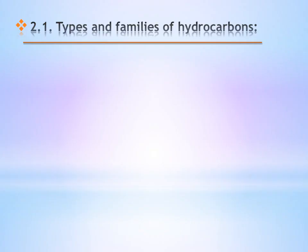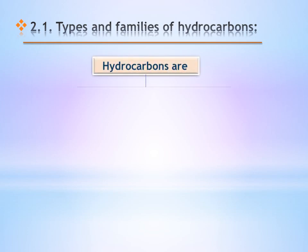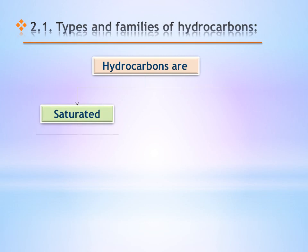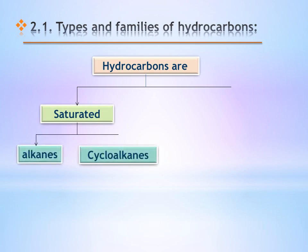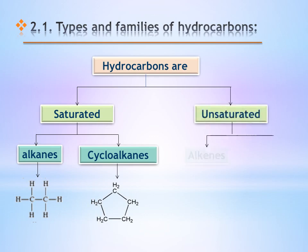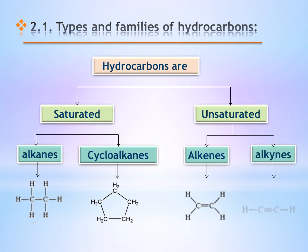Now, what are the types and families of hydrocarbons? Hydrocarbons could be saturated, like alkanes or cycloalkanes, where all the bonds are single covalent bonds. Or unsaturated hydrocarbons, like alkenes which have a double bond, and alkynes which have a triple bond.